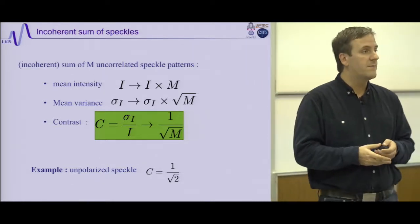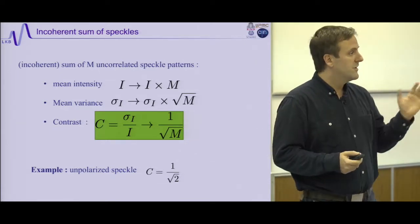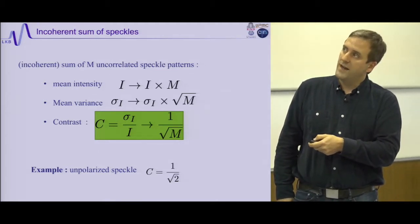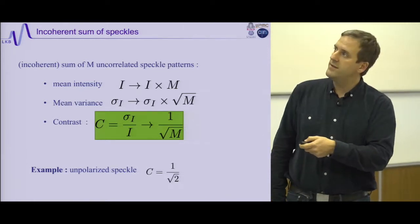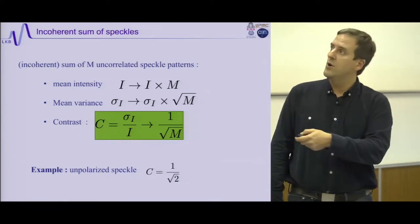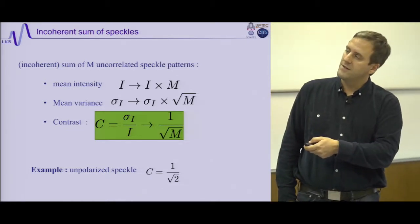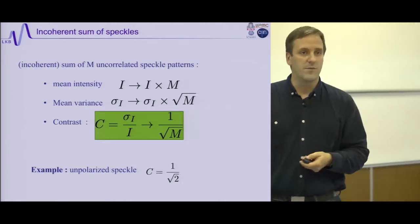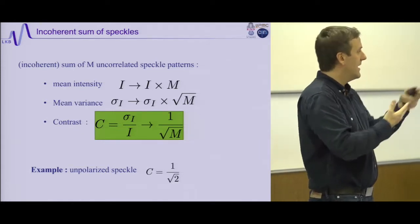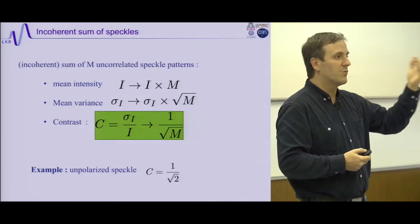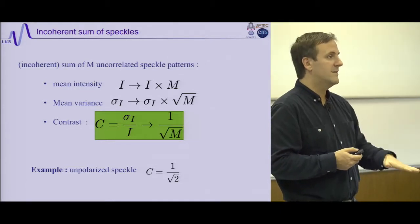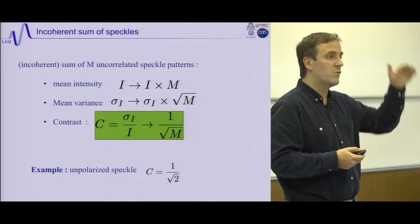If you sum m uncorrelated speckles — for instance by shining several lasers — the mean intensity multiplies by m, but the variance goes as √m, so the contrast goes as 1/√m. This explains why incoherent light with many spectral or spatial contributions on a scattering system (like a wall) produces a homogeneous, low-contrast result. A simple example: unpolarized light gives two uncorrelated speckles for the two polarizations; with a polarizer the contrast is 1, and without it the contrast is reduced by √2.